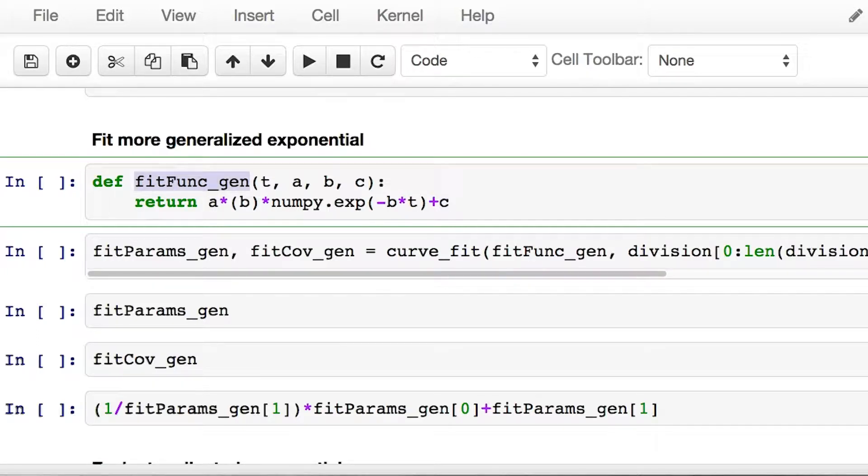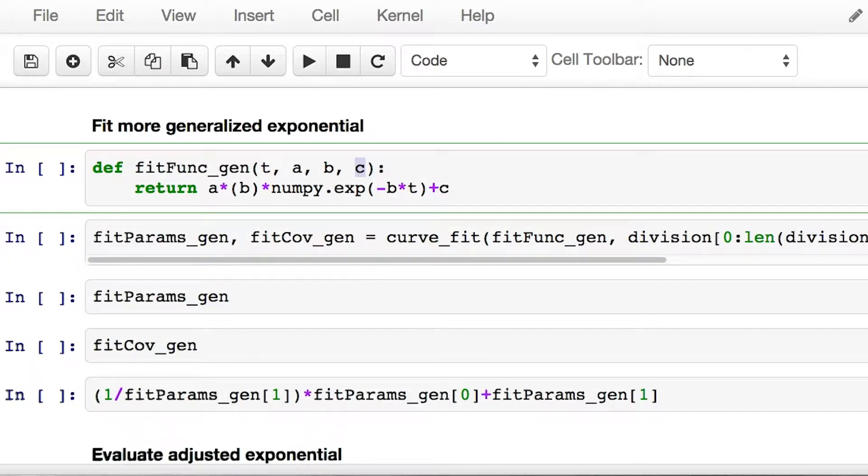So fit func lets you pass to it in addition to the independent parameter time, the parameter which we had before, b, but as well as that, a and c. Other than that, it's exactly the same.